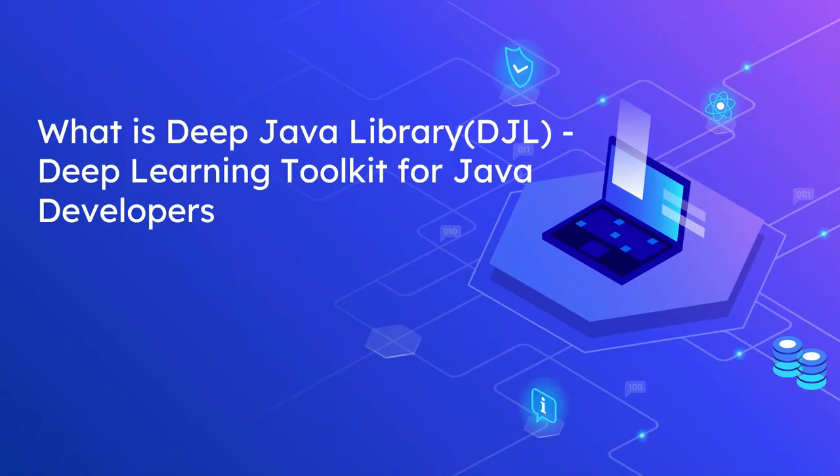Welcome to Tech Forum. In this video, let us understand what is Deep Java Library, called DJL. Deep Java Library is an open source library created by Amazon to develop machine learning and deep learning models natively in Java. DJL is designed to be easy to get started with and simple to use for Java developers.